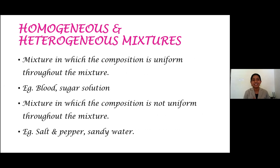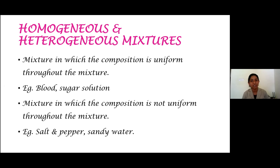So far you have considered the definition of mixtures. Now, this mixture is divided into two: homogeneous mixtures and heterogeneous mixtures. Mixtures in which the composition is uniform throughout are known as homogeneous mixtures, and the examples are salt solution, sugar solution, etc. Whereas the mixture in which the composition is not uniform throughout is known as heterogeneous mixtures. The examples for heterogeneous mixtures are salt and pepper.